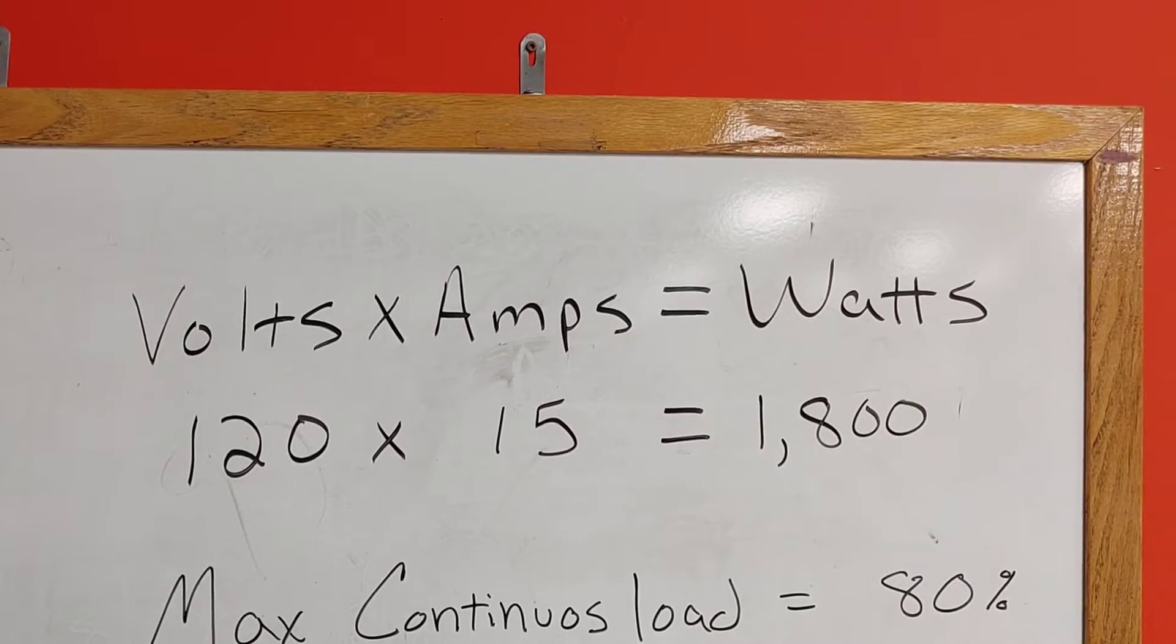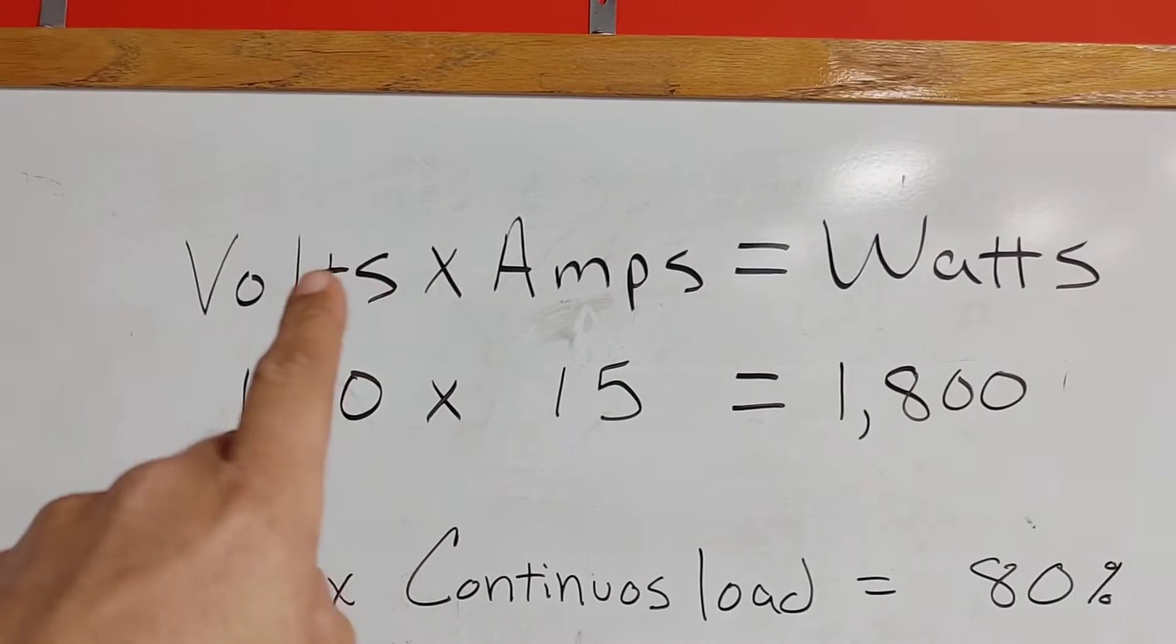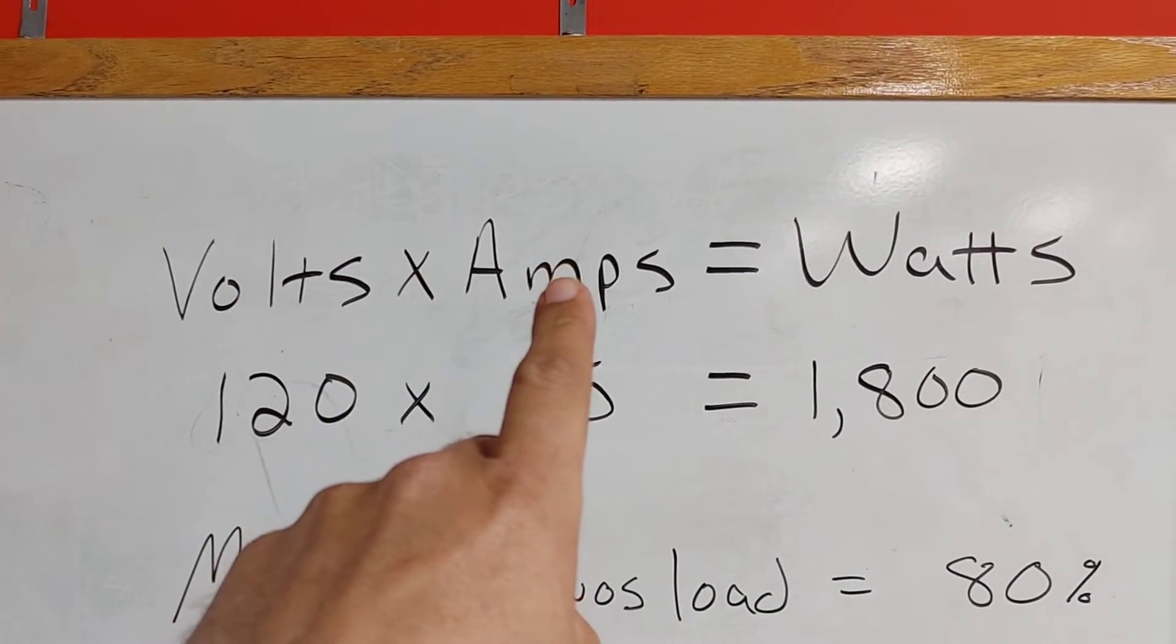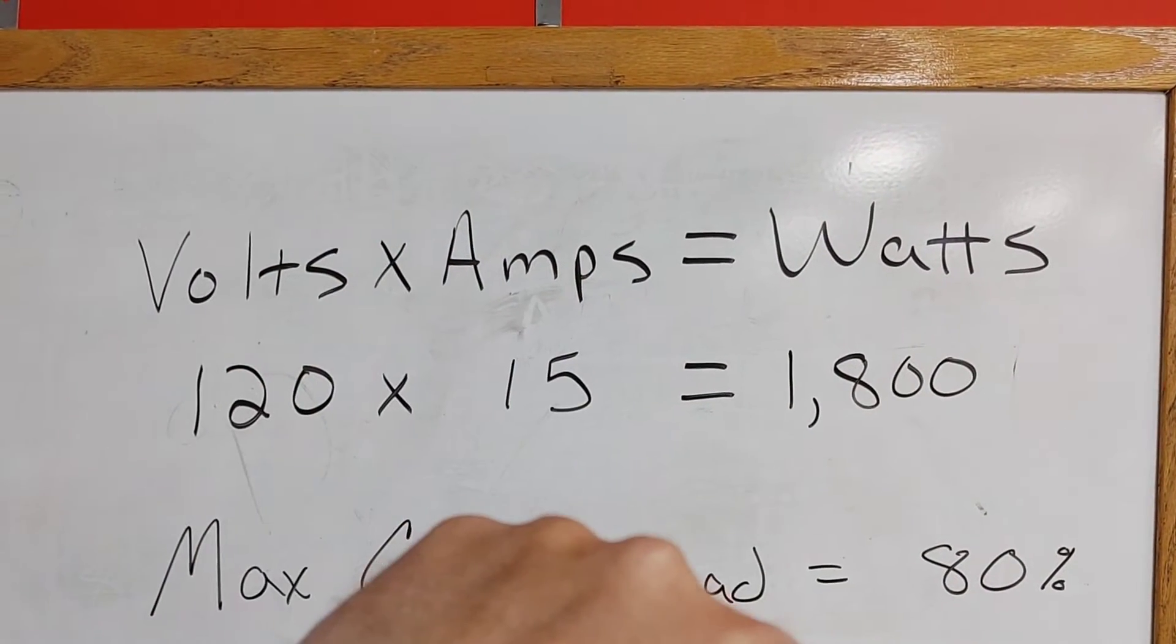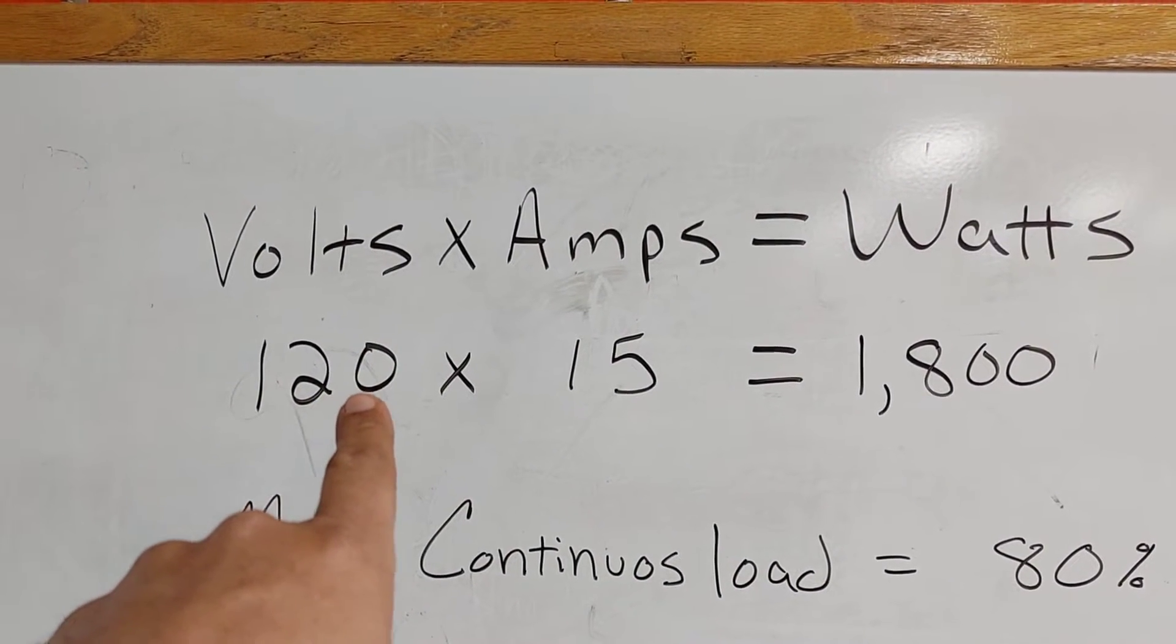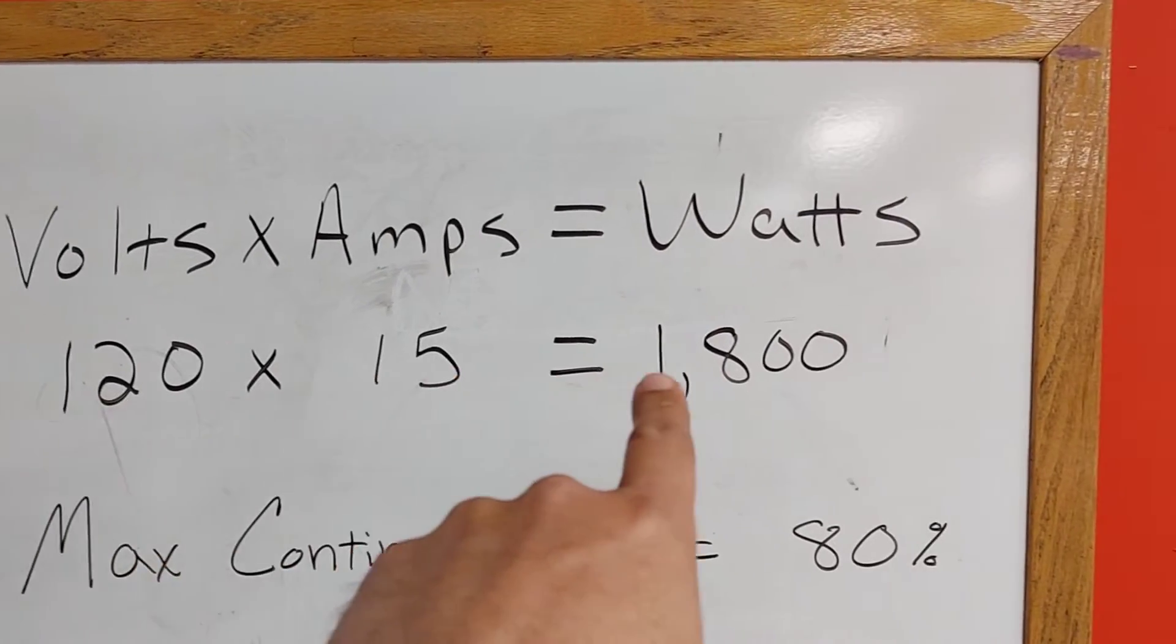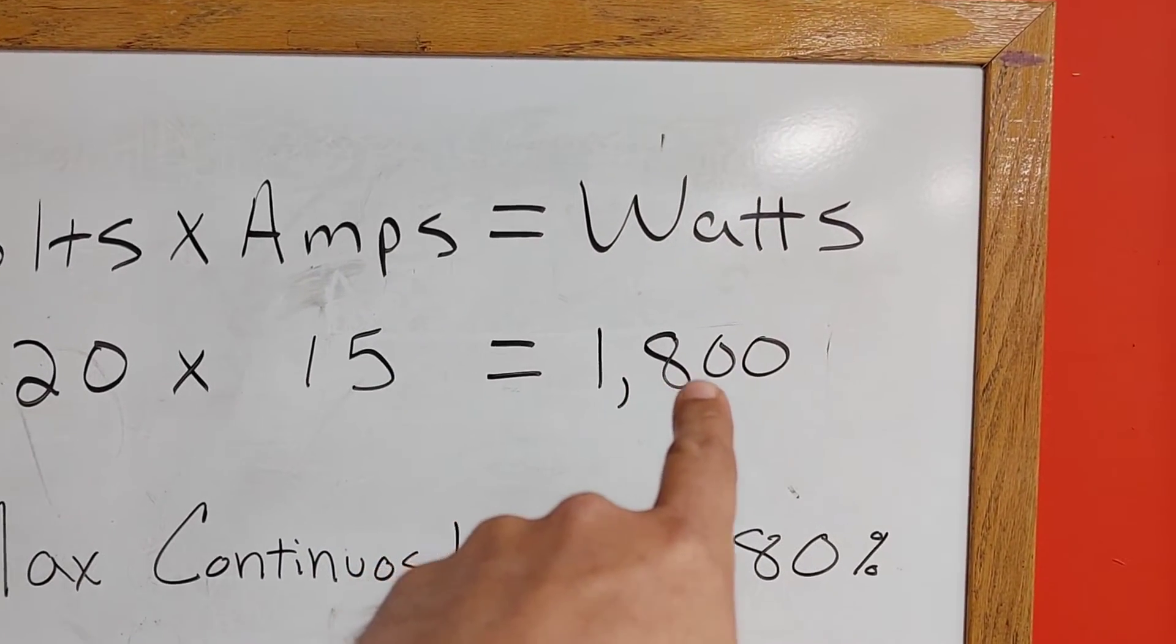To figure this out, we need to know a little bit of Ohm's Law. Let's take a look at the dry erase board. The first bit of Ohm's Law we need to know is how to figure out watts, and how we figure that out is you take your volts times your amps. In the situation I want to discuss, we're going to be on a 120 volt circuit. We're going to be using a 15 amp breaker, and that equals 1,800 watts.